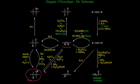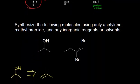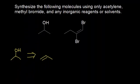Or I could do a hydroboration oxidation, which would be an anti-Markovnikov addition of the OH. I want a Markovnikov addition — I want to add the OH to the most substituted carbon. So it's going to be water and sulfuric acid for this transition. Now I have an alkene, but I want to get back to acetylene, so I go back up to my flow sheet.